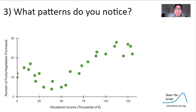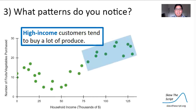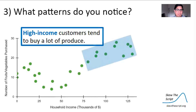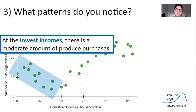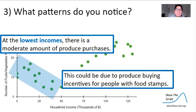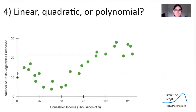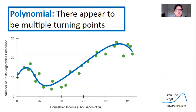Pause the video and reflect: what patterns do you notice? High-income customers tend to buy a lot of produce — they likely have funds for organic food and time to prepare it. At moderate incomes, there is less produce buying. At the lowest income levels, there's a moderate amount of produce purchases, possibly due to produce-buying incentives for food stamp recipients. Does this graph look linear, quadratic, or polynomial? It appears more polynomial in nature — there are multiple turning points, a linear model would be a straight line, and a quadratic model would have just one turning point.